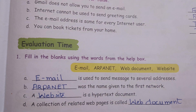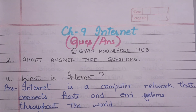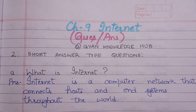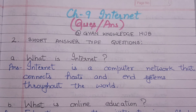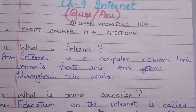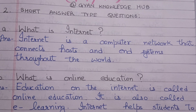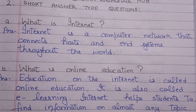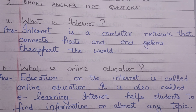Now we come to the short answer type questions. The first question is: what is the internet? Internet is a computer network that connects hosts and end systems throughout the world. Next question is: what is online education? Education on the internet is called online education. It is also called e-learning. The internet helps students to find information on almost any topic.